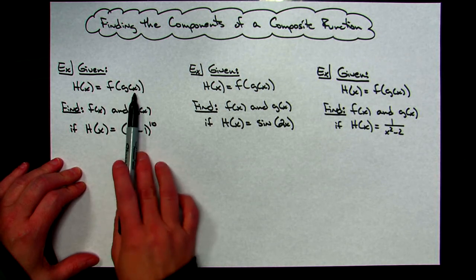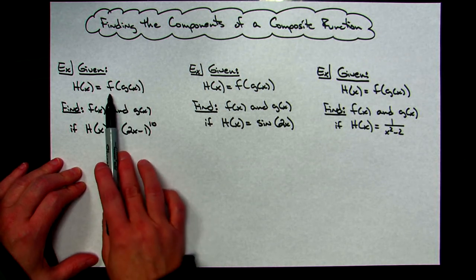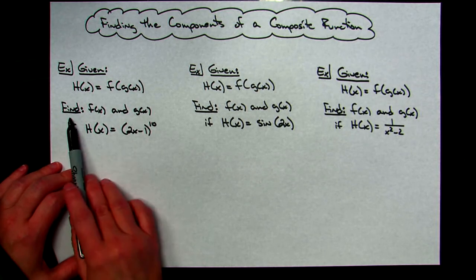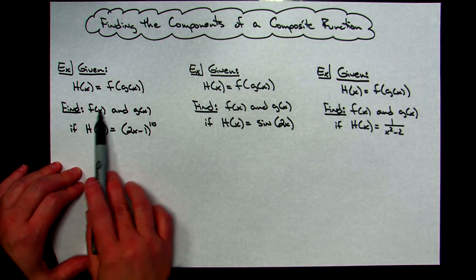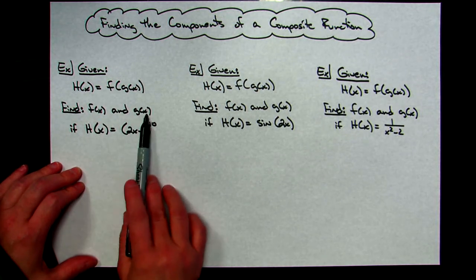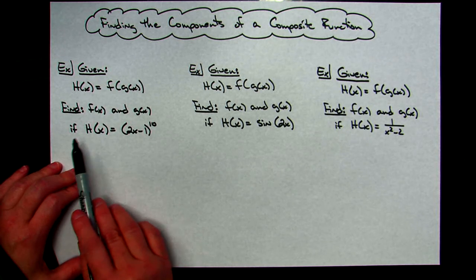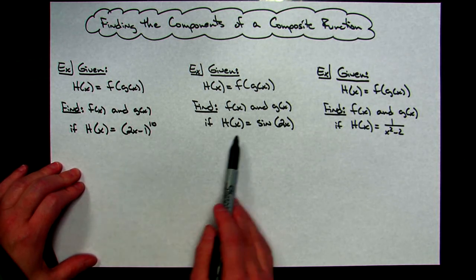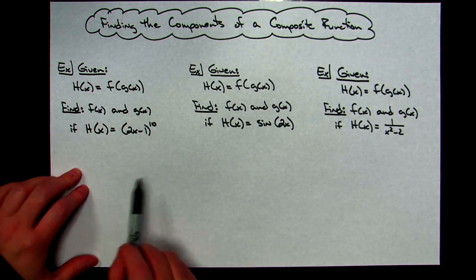So then our g of x is going to be our inside function and our f is going to be our outside function. Now I'm going to ask you to find the individual components. I'm going to ask you to find f of x, I'm going to ask you to find g of x, given a composite function and the composite function can change for each example.